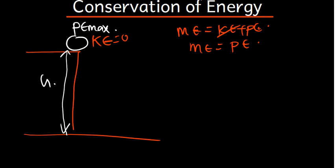As the object starts moving and reaches the middle, some of the potential energy is converted to kinetic energy. The potential energy is not lost — it's converted. At the midpoint, half of the potential energy has been converted to kinetic energy, so kinetic energy equals potential energy at that point.